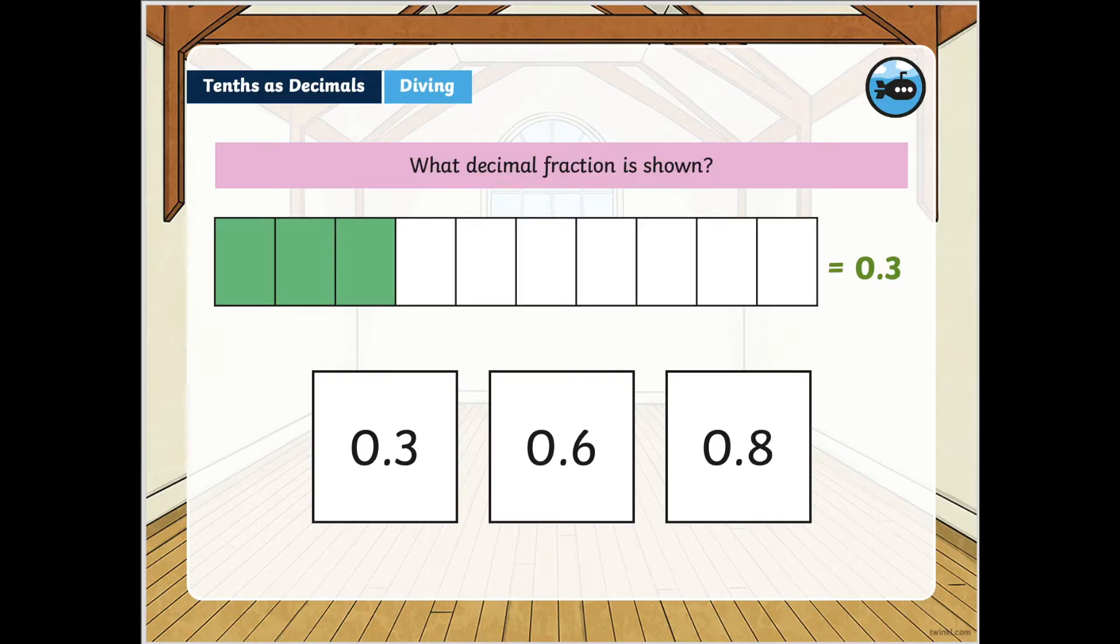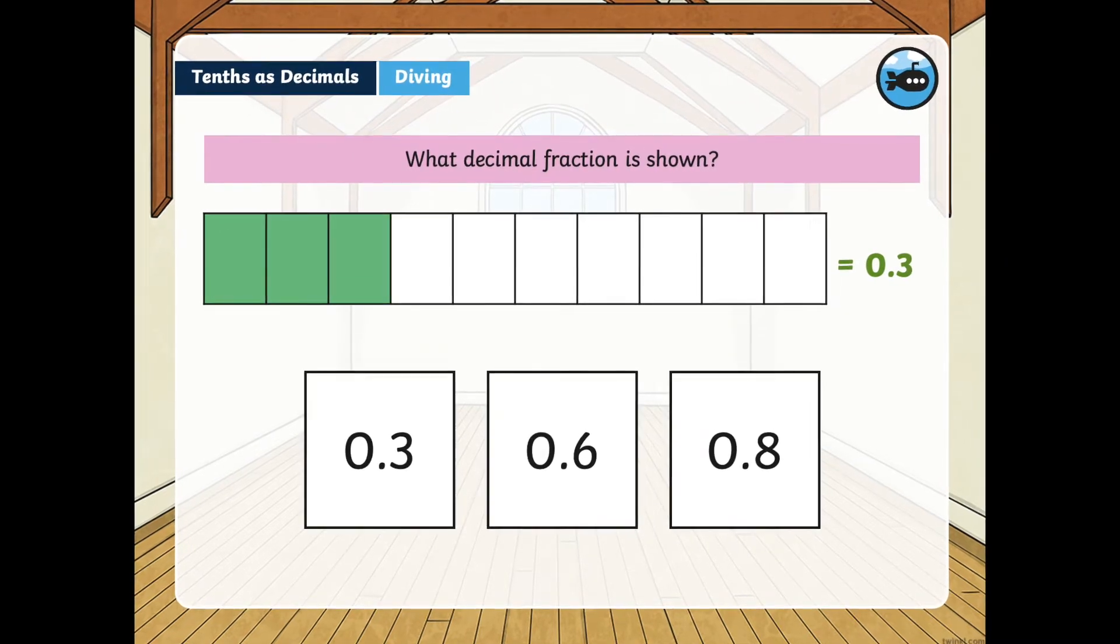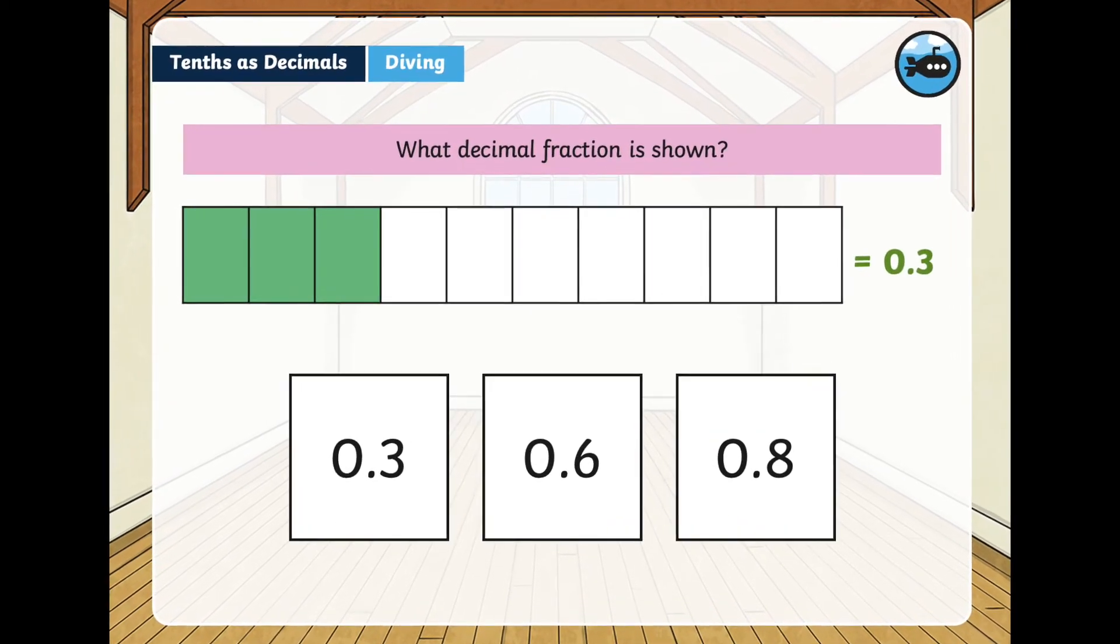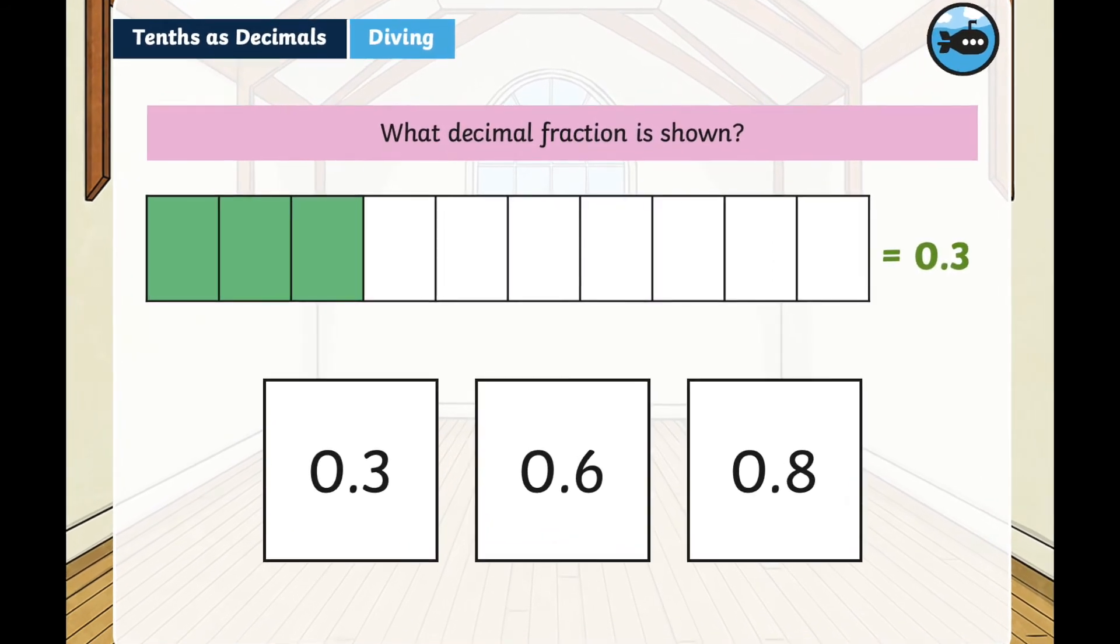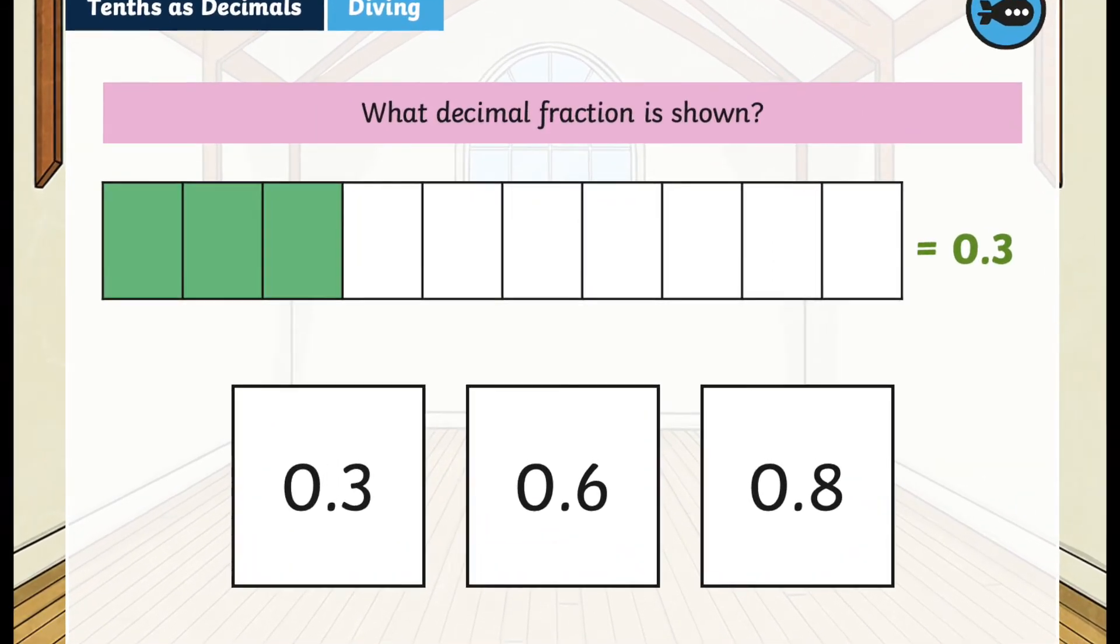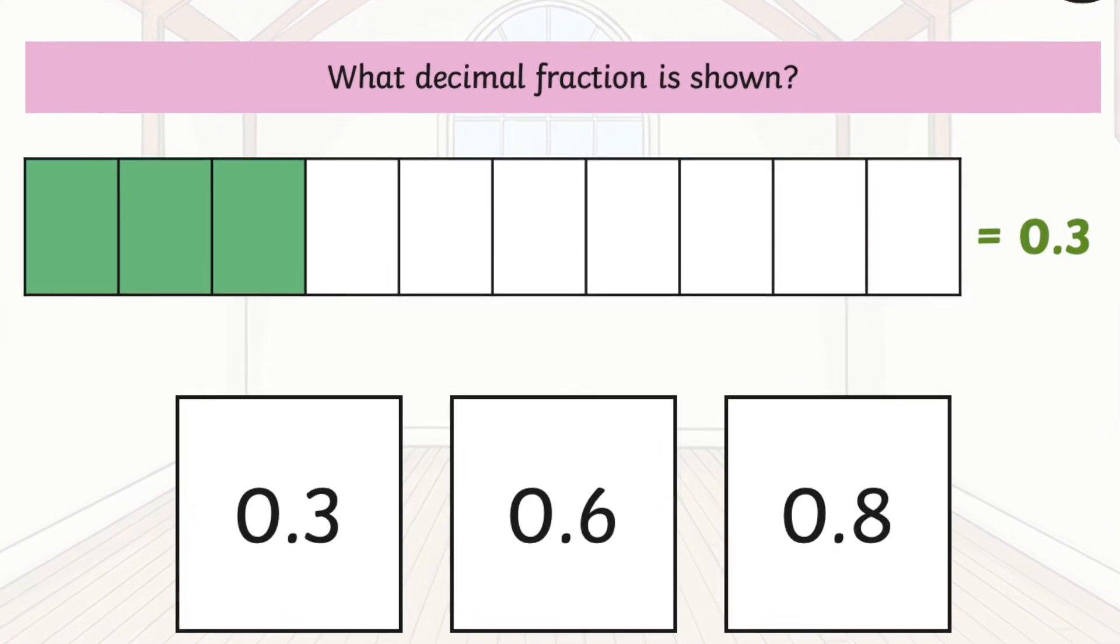At first, the decimal fraction may be introduced as tenths. For example, here looking at the bar model and showing that three of the ten boxes are colored in, and therefore the decimal fraction is 0.3.